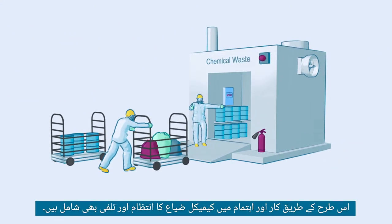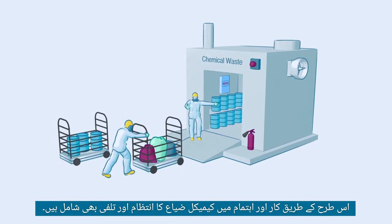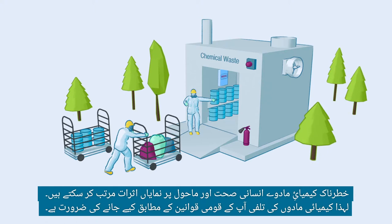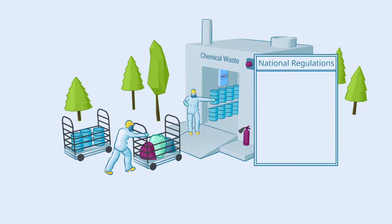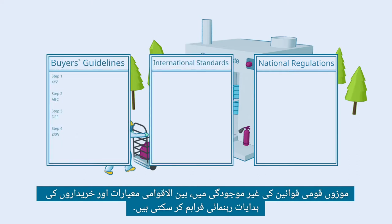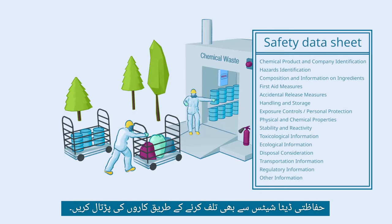Such practices and provisions also include those for the management and disposal of chemical waste. Hazardous chemicals can have a significant impact on human health and the environment. Therefore, chemical waste needs to be disposed of according to your national regulations. In the absence of adequate national regulations, international standards and buyer's guidelines can provide guidance. Also, check the disposal procedures from the safety data sheets.